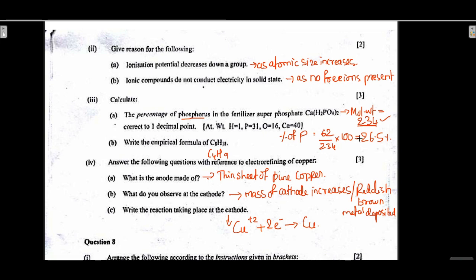Write the empirical formula of C8H18: divide by common factor 2 to get C4H9. Answer the following on electro-refining of copper: the anode is impure copper, the cathode is a thin sheet of pure copper. At the cathode, the mass increases — reddish brown metal is deposited. Cathode reaction: Cu2+ gains two electrons to form Cu.